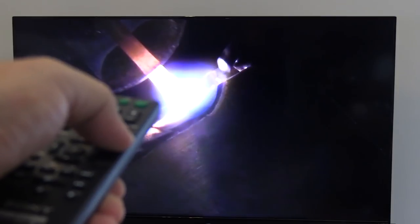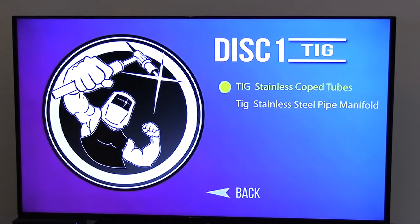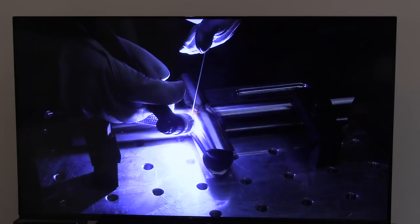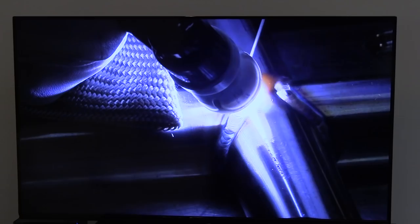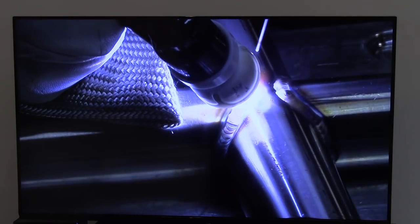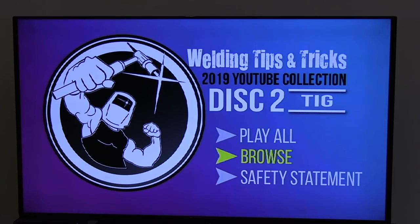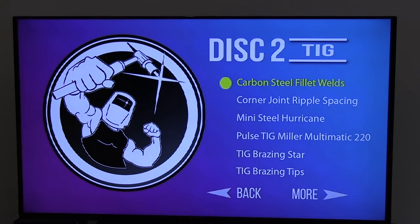Disc one is TIG aluminum and stainless. There's several videos here on aluminum. If you're struggling on aluminum or stainless, I think this will really help. I hear from a lot of people that like to play these in their shop. Maybe they don't have internet out in their garage or no Wi-Fi signal. You don't need it. Just pop a DVD in and put it on the big screen.